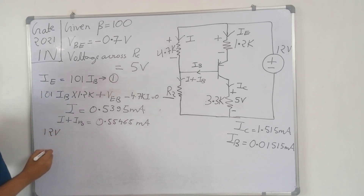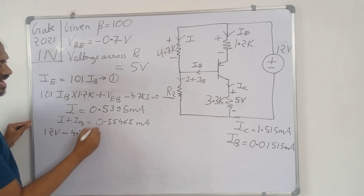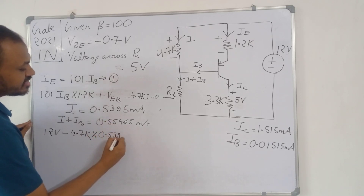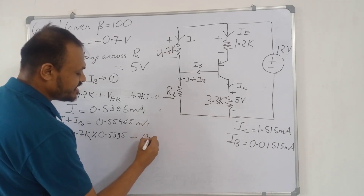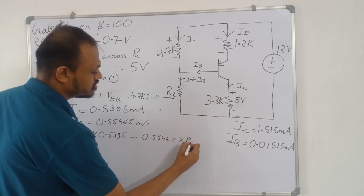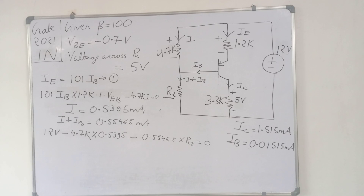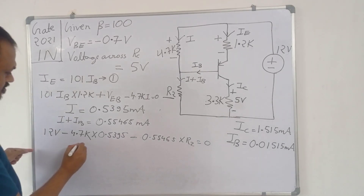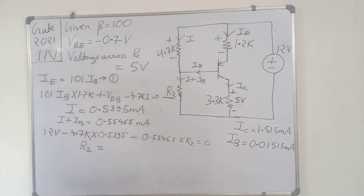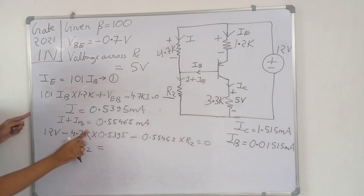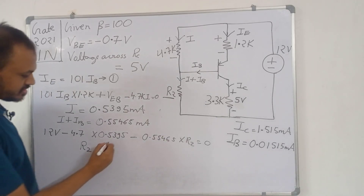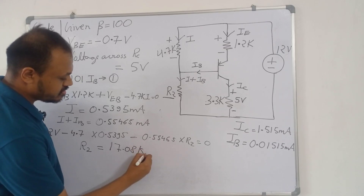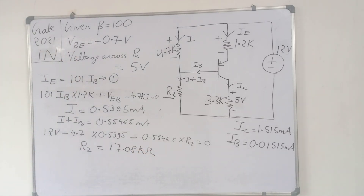Continuing the KVL in the outer loop: 12 volt minus 4.7kΩ × IE, where IE is 0.5395 milliamperes, minus (I + IB) × R2, where I + IB is 0.55465 milliamperes. Solving this, the value of R2 will be equal to 17.08 kilo-ohm. This is the value of R2.